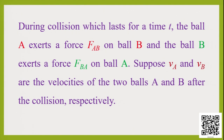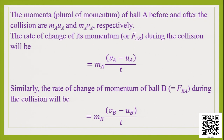During the collision, which lasts for a time duration t, the objects exert forces on each other. Let ball A exert a force FAB on ball B, and ball B exert a force FBA on ball A. After the collision there will be a change in velocity: let the final velocity of ball A be vA and the final velocity of ball B be vB.